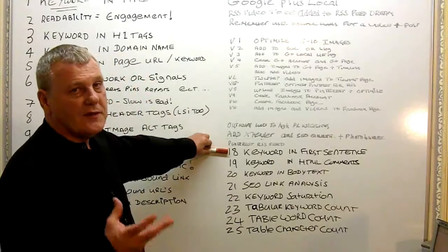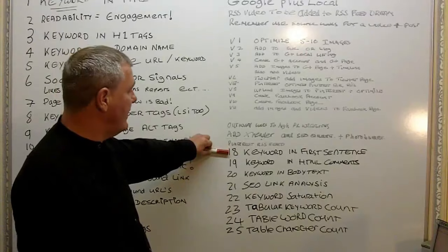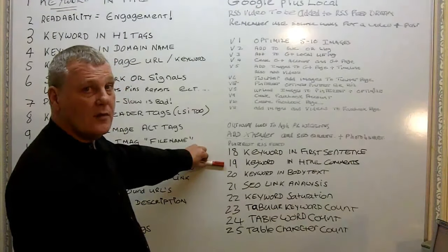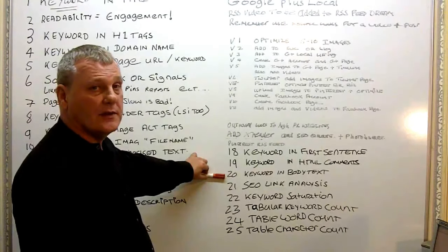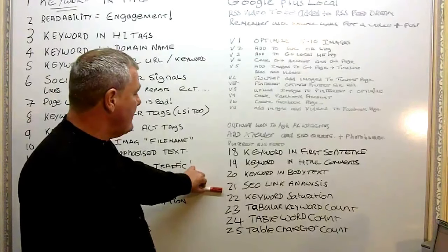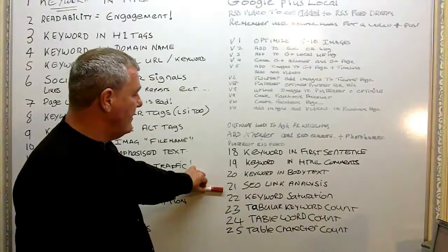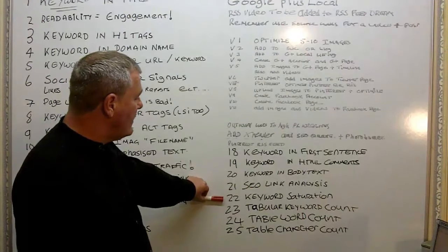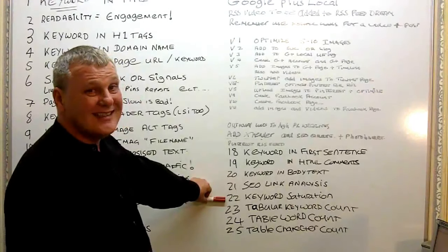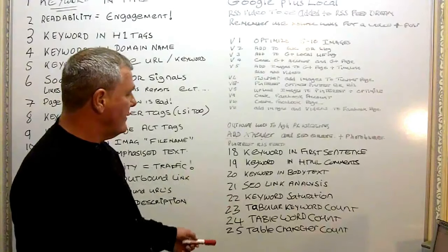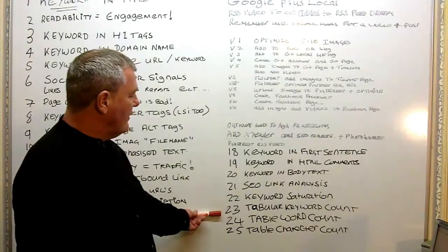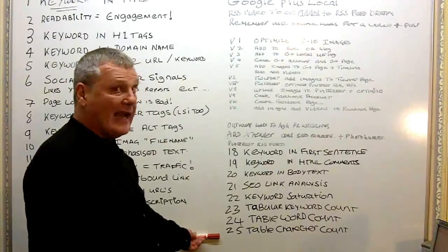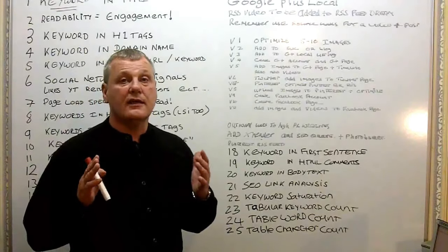Keyword in the first sentence — whatever your first sentence is on your page, your main keyword should be in it. Keyword in HTML comments is another one. Keywords in body text — the amount of times you put your keyword in the body text, and we mustn't over-optimize. SEO link analysis — your links must be good, there must be a mixture, varied anchor texts, we have to make sure of that with the new Google. Nothing worse than saturated keywords — Google has made it very clear it will penalize over-optimized keywords. Word count matters too; Google wants good quality content, so around 700 words is better.